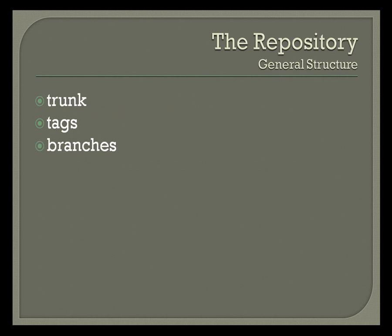The general structure of your repository in subversion has three main directories within a given project: trunk, tags, and branches.